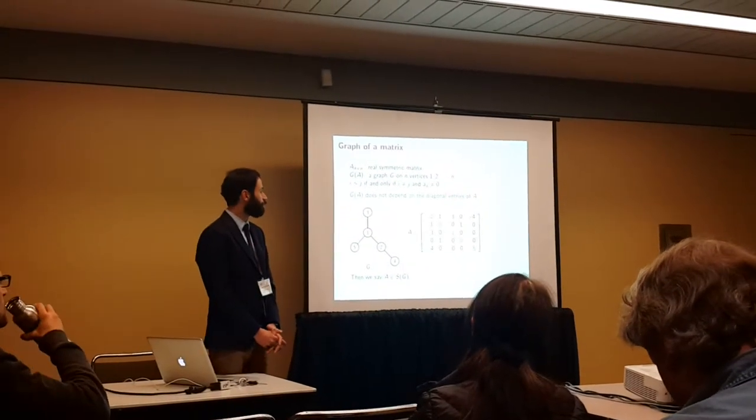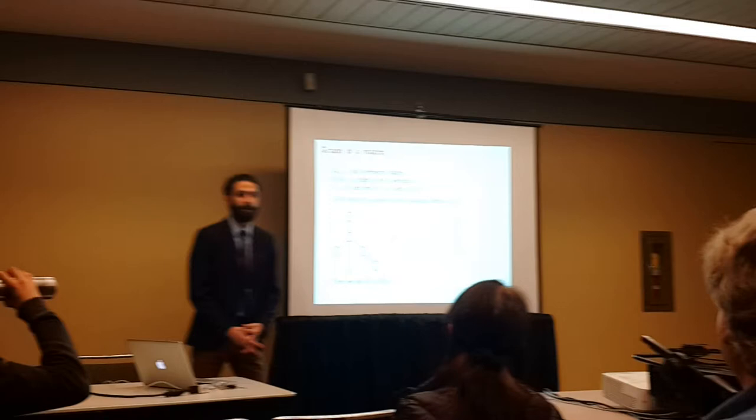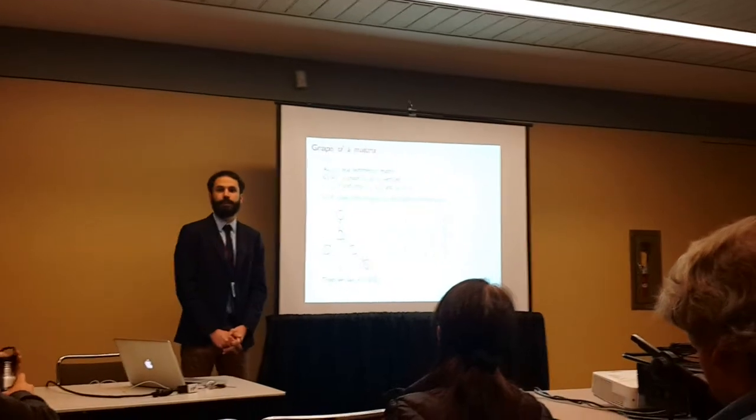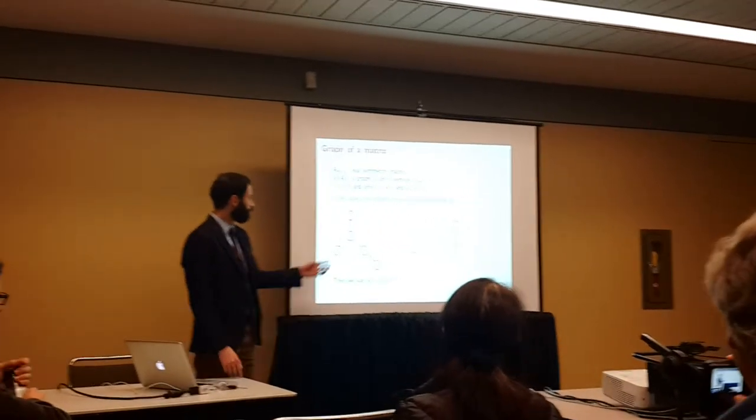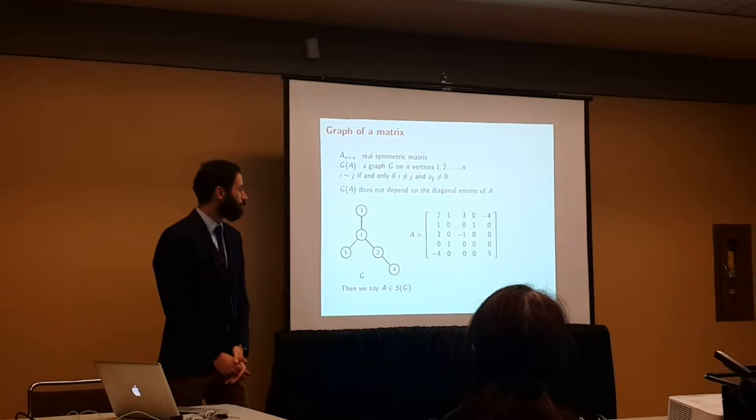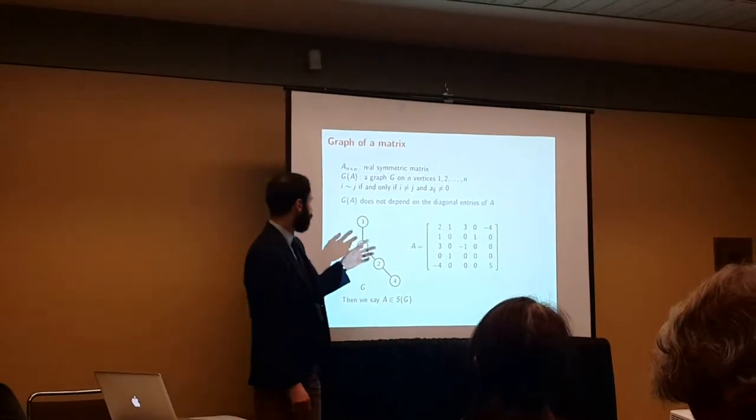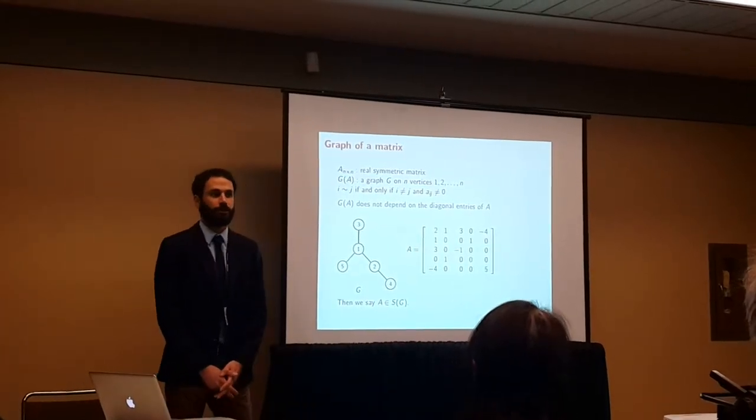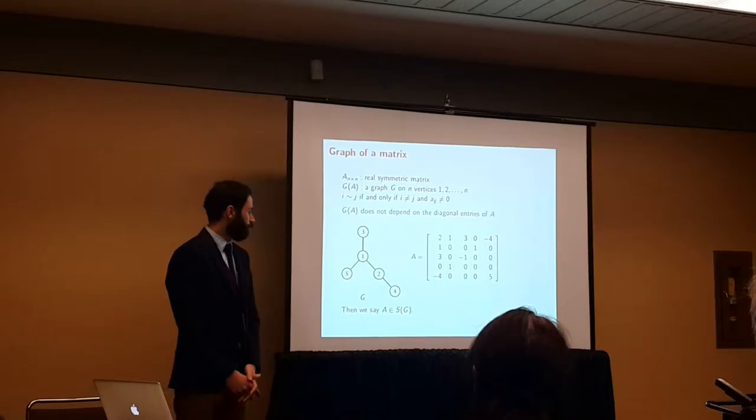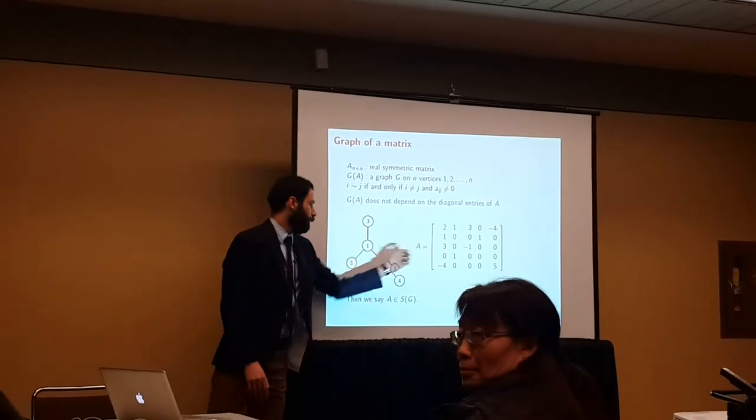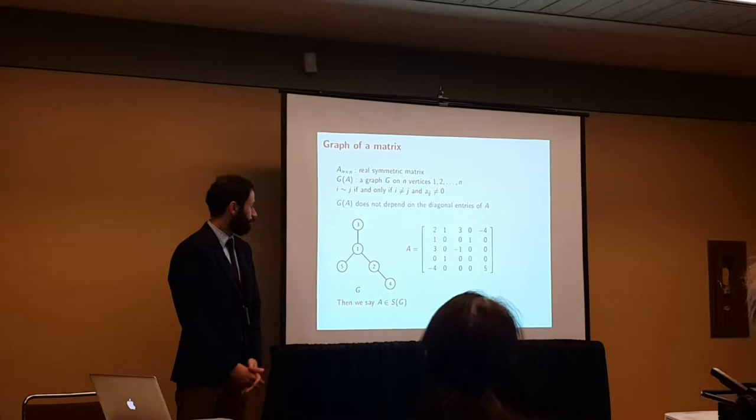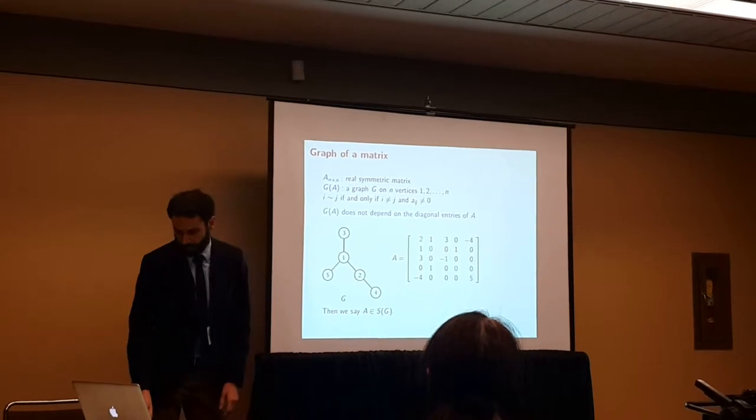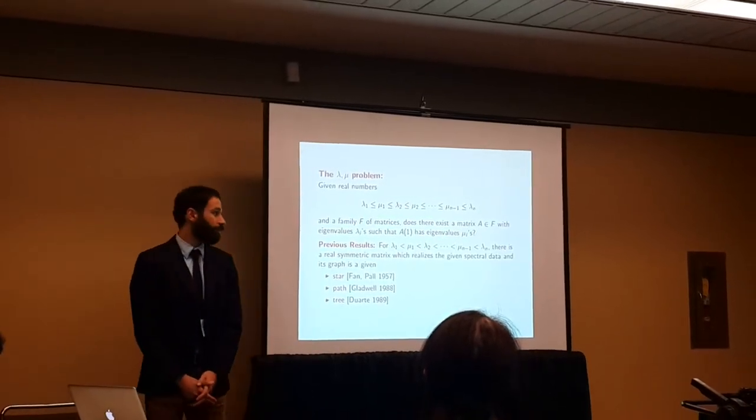One of them is the graph of a matrix. If you have a real symmetric matrix on n rows and n columns, then you can find a graph on n vertices. We define vertex i to be connected to j if the i,j entry is non-zero. We don't care about the diagonal entries. For example, a matrix like this would have a graph that looks like this one, and we call A to be an S of G.